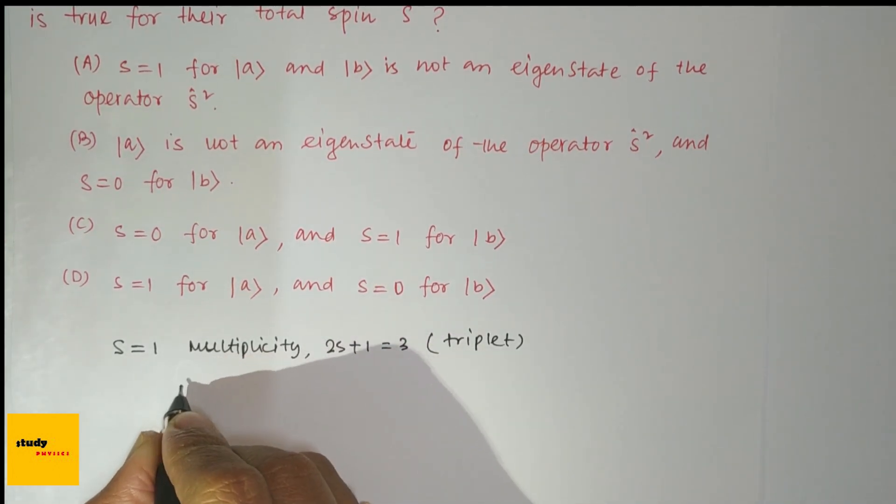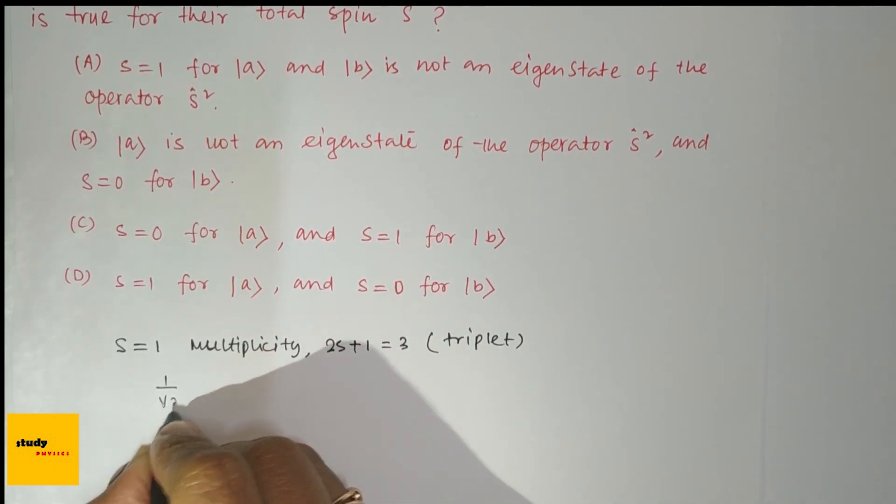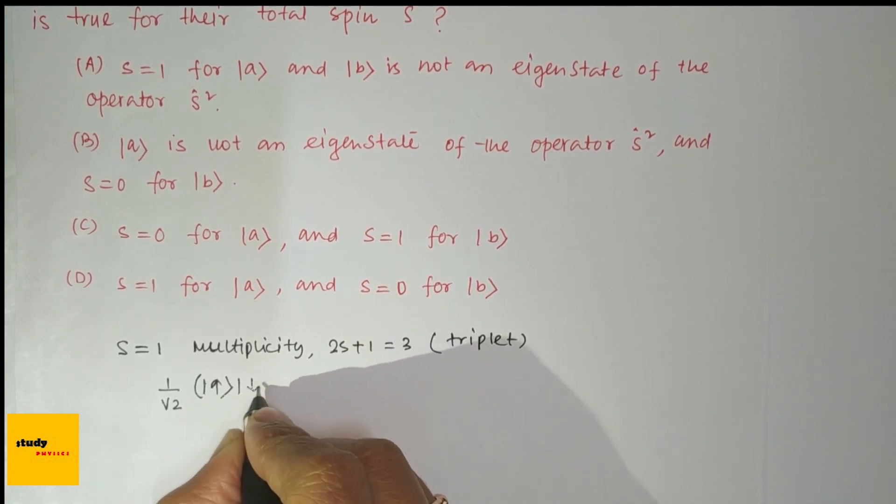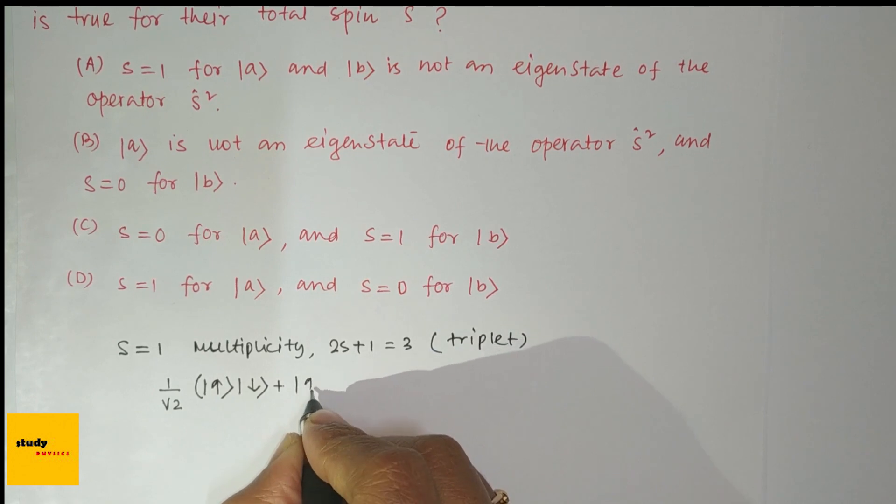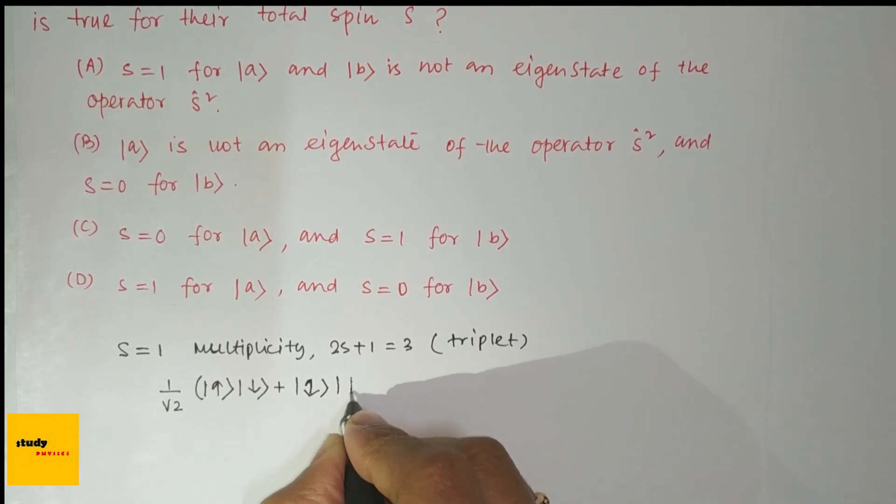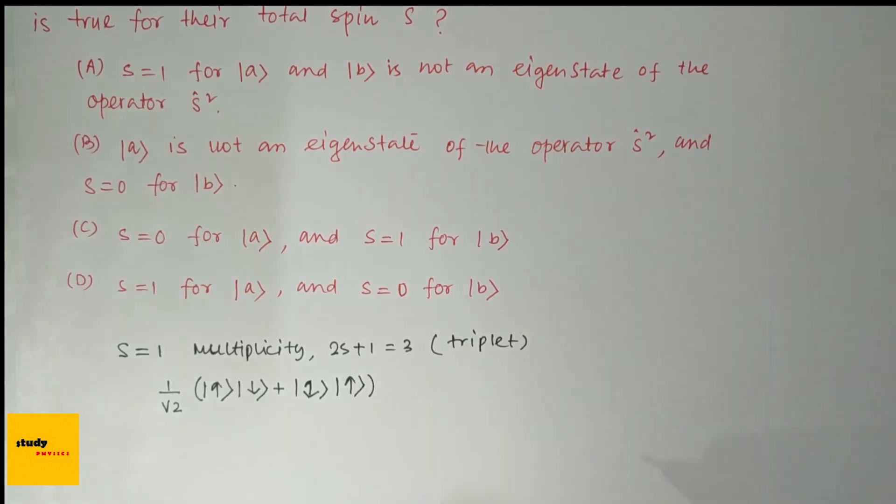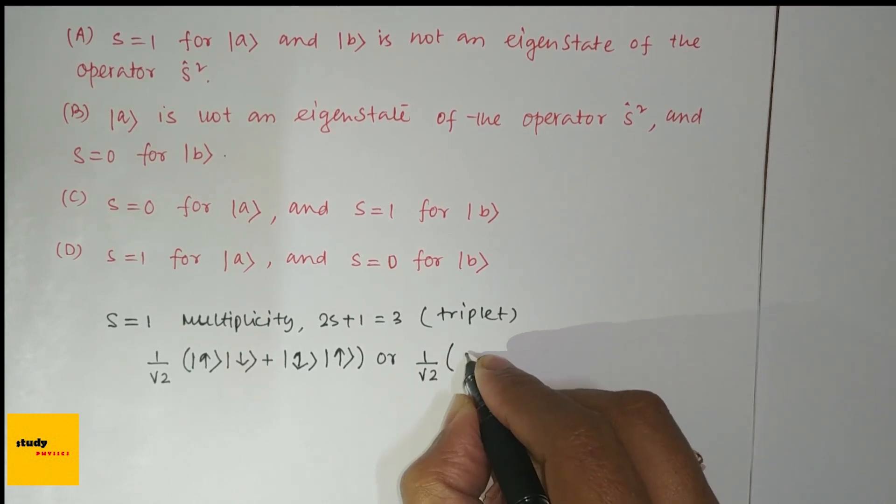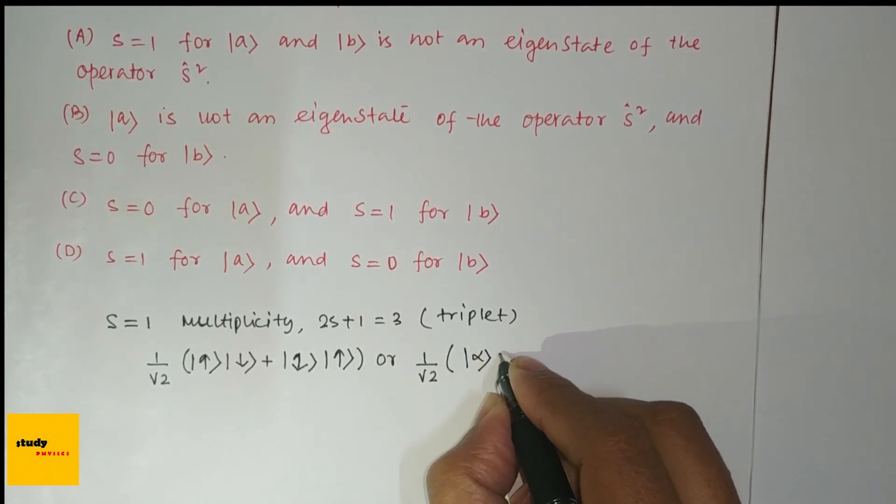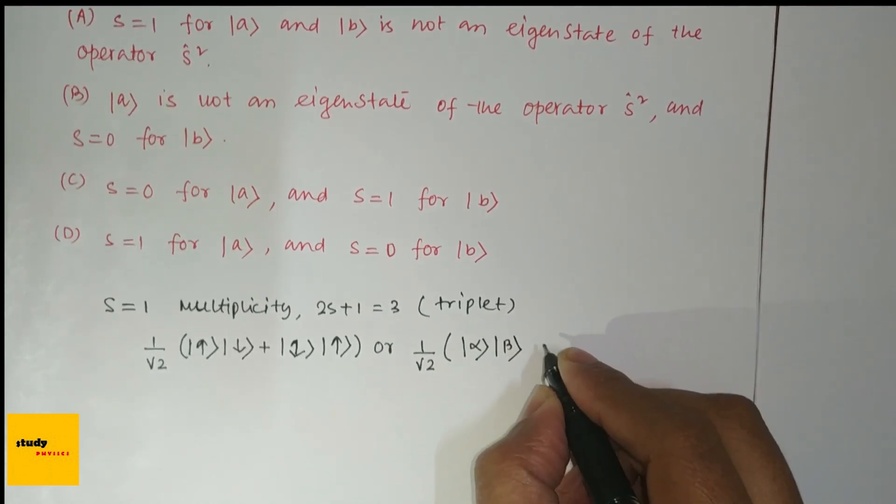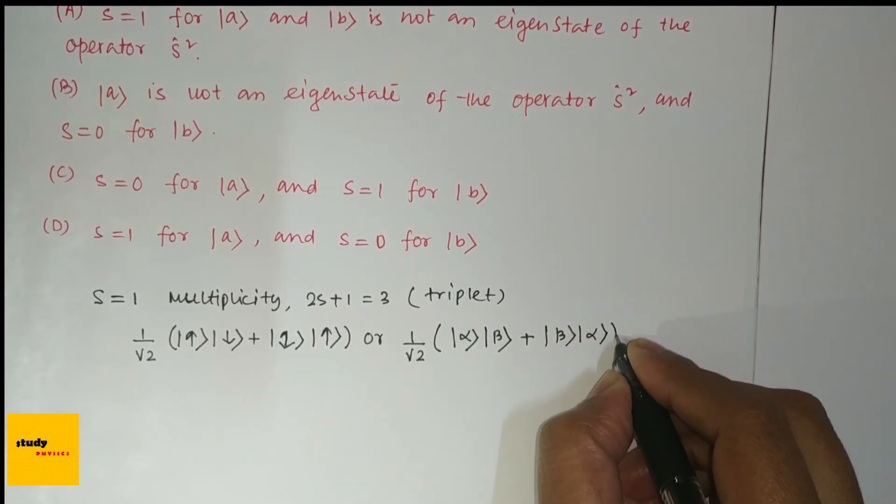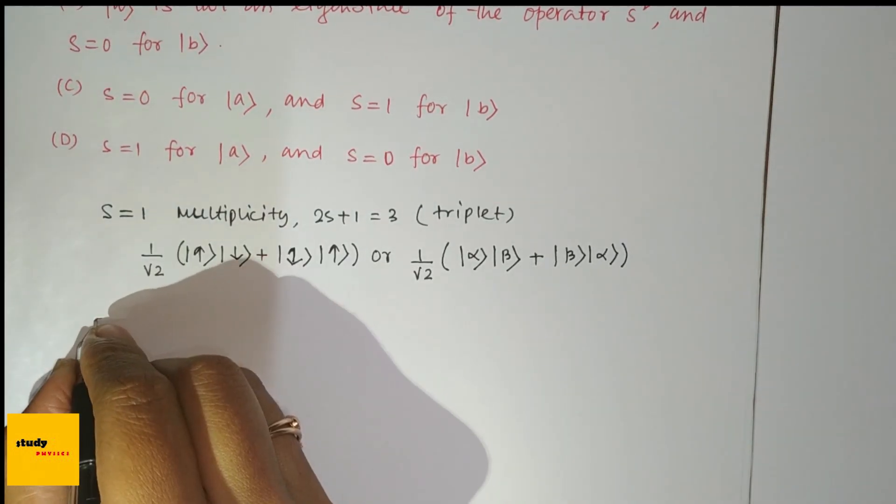For S=1, our state is 1/√2 (|α⟩|β⟩ + |β⟩|α⟩), or we can write that 1/√2 (alpha beta plus beta alpha).